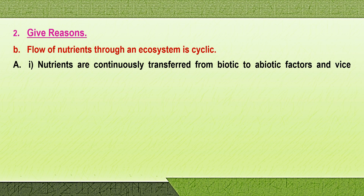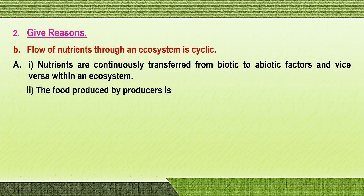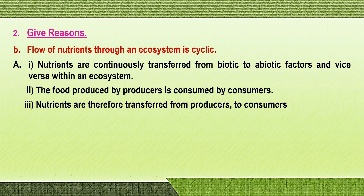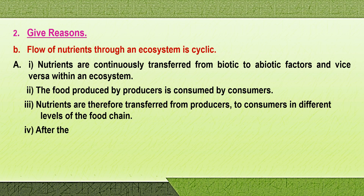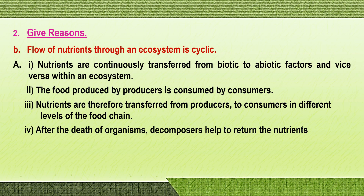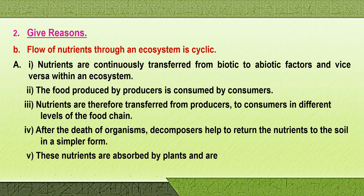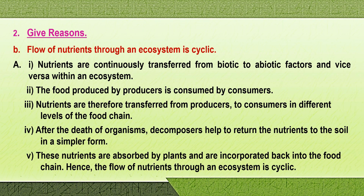Third reason: flow of nutrients through an ecosystem is cyclic. Nutrients are continuously transferred from biotic to abiotic factors and vice versa within an ecosystem. The food produced by producers is consumed by consumers. Nutrients are therefore transferred from producers to consumers at the different trophic levels of the food chain. After the death of organisms, decomposers help return the nutrients to the soil in a simpler form. These nutrients are absorbed by plants and incorporated back into the food chain. Hence the flow of nutrients is cyclic.